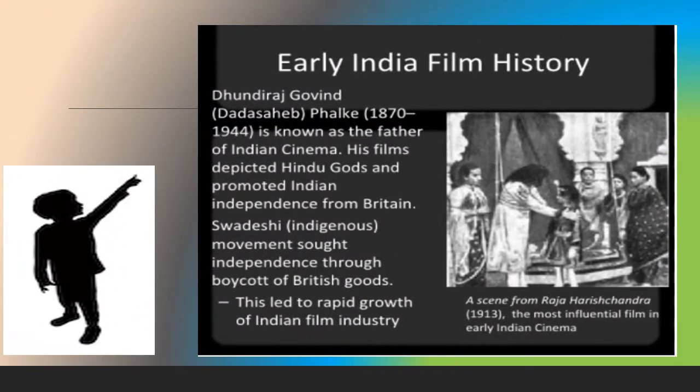Early Indian film history: Dhundiraj Govind Dada Saheb Phalke (1872–1944) is known as the father of Indian cinema. His films depicted Hindu gods and promoted Indian independence from Britain. The Swadeshi movement sought independence through boycott of British goods, which led to rapid growth of the Indian film industry. The scene from Raja Harishchandra is one of the most influential films in early Indian cinema.